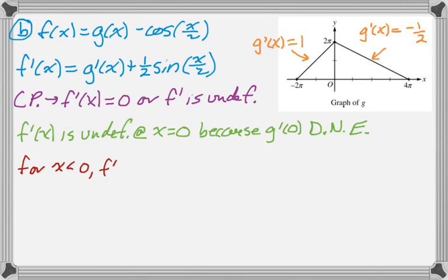For x less than 0, we have f prime of x equal to g prime is 1, and then plus 1 half sine of x over 2. But if you think about the range of that function, so you're at 1 and you can go up 1 half and down 1 half, you're never going to get to 0. So it doesn't ever equal 0, so no critical points from there.